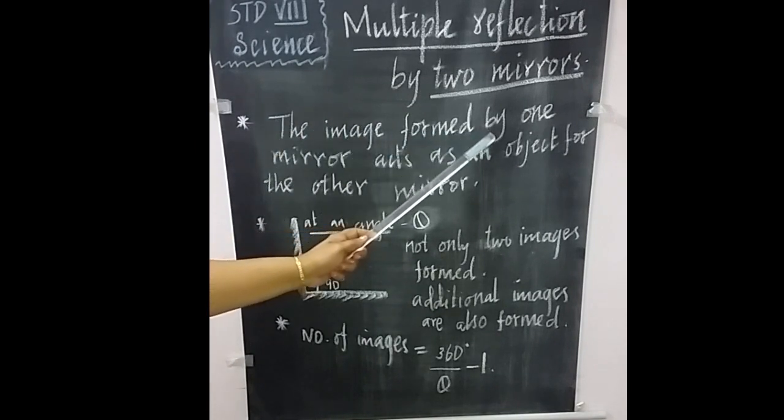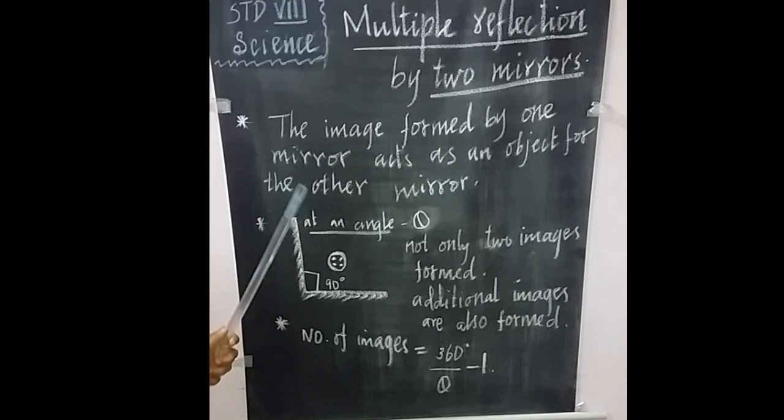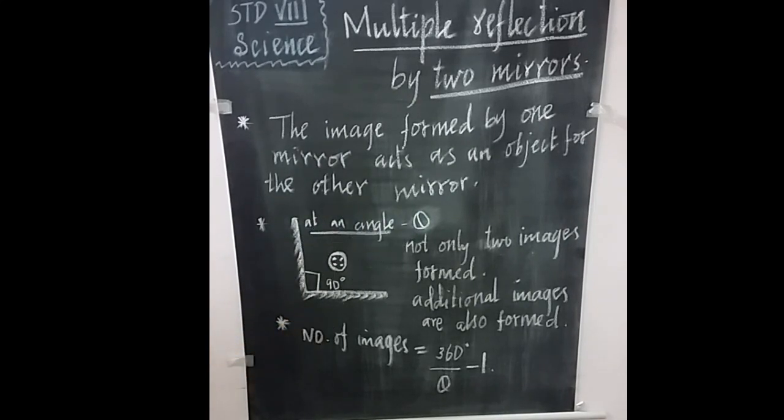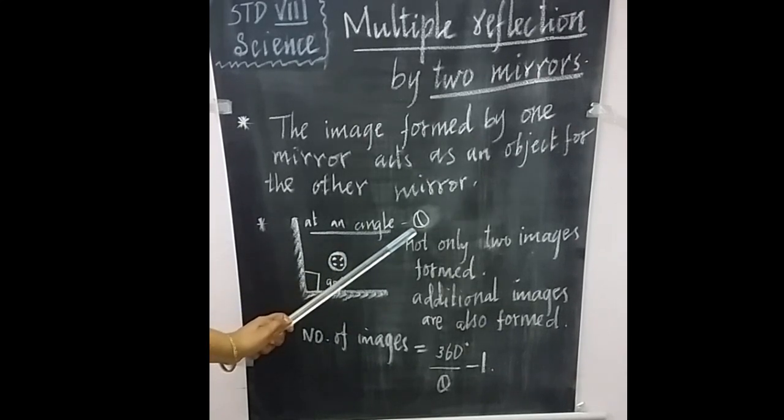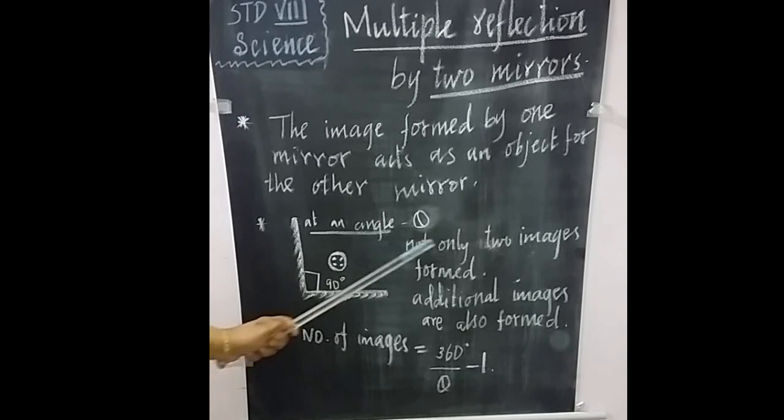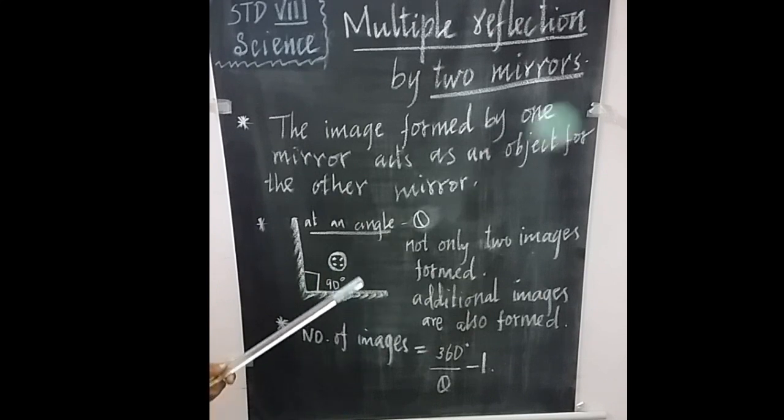The image formed by one mirror acts as an object for the other mirror. The same way, when the object is placed between two mirrors which are kept at an angle, we can call theta, you can notice not only two images but some additional images will also form. There is a small formula for calculating the number of images.